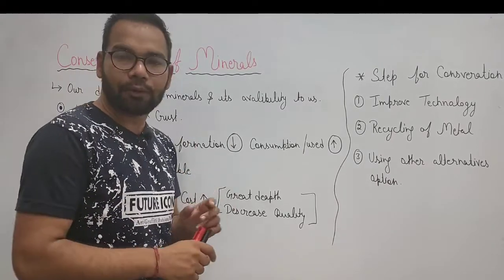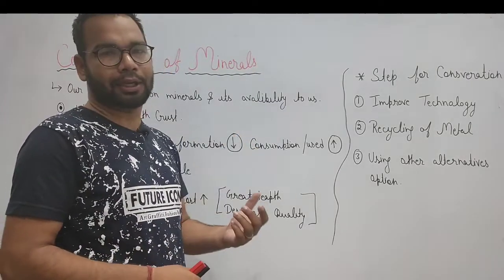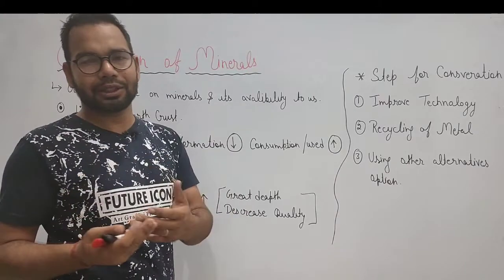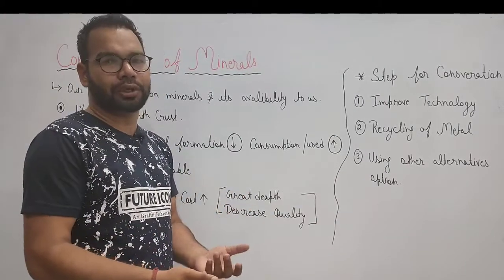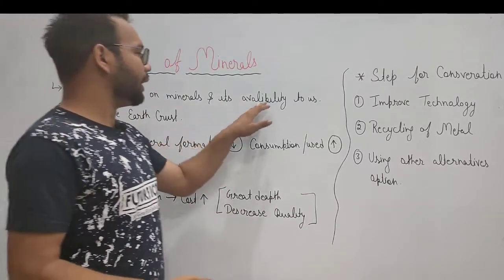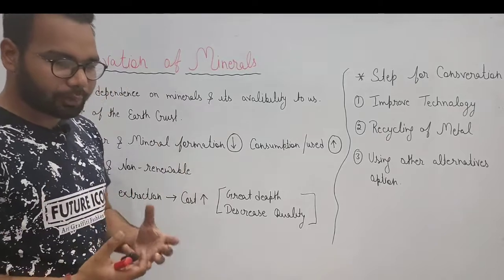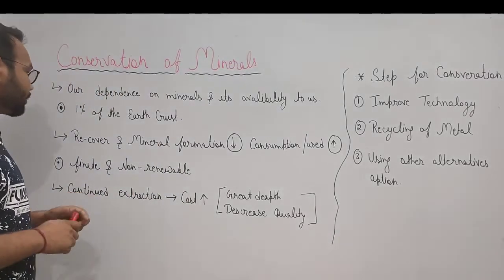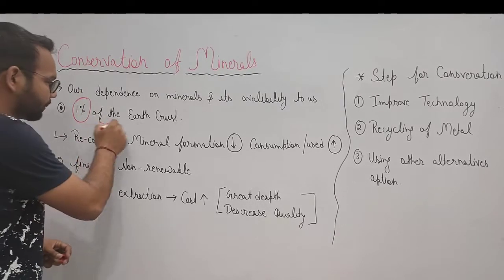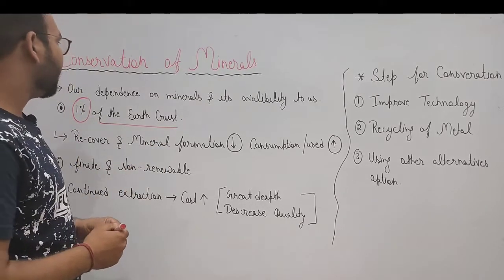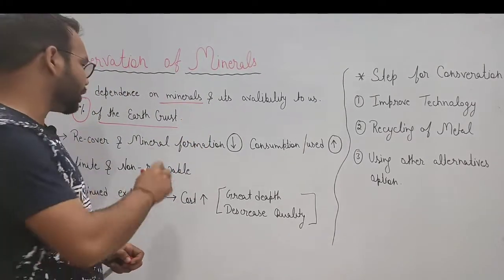We are dependent on metals — iron, magnesium, copper, and other metals. But how much is available to us? Only 1% of the earth's crust is available to us. That 1% of the earth's crust is where minerals are found.